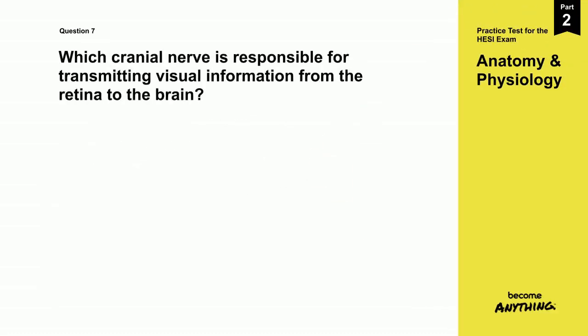Question 7. Which cranial nerve is responsible for transmitting visual information from the retina to the brain?